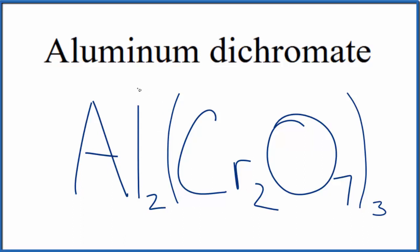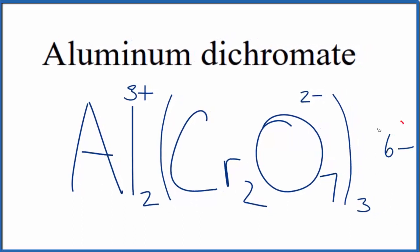Let's check our work though. We said aluminum was 3-plus and the whole dichromate ion is 2-. 3 times 2- is 6-, 3 times 2-plus is 6-plus. These two numbers add up to 0, net charge of 0. So this is the formula for aluminum dichromate.